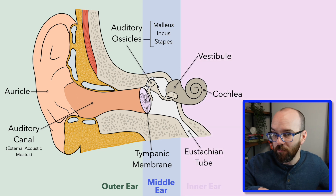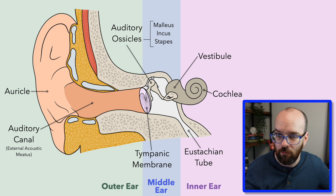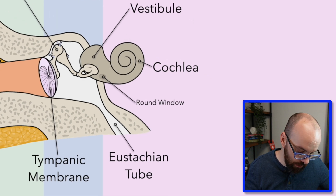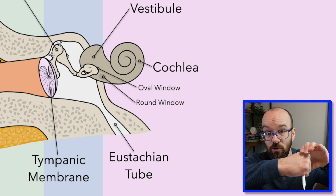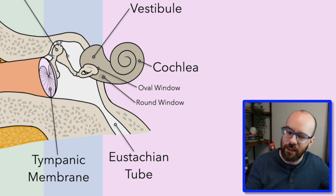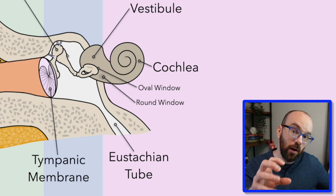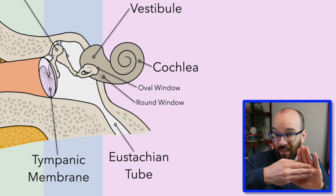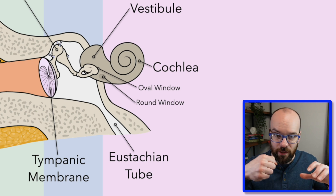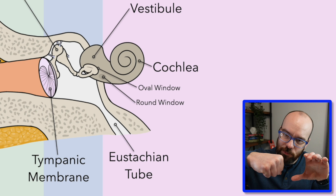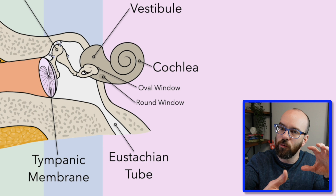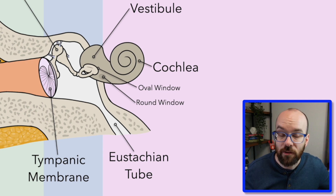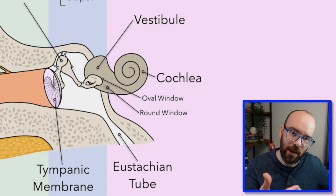All of the bony labyrinth is part of the inner ear. Two structures to add here: the oval window and the round window. The oval window is where the stapes actually pushes into the bony labyrinth. The round window isn't really an opening — it's a softer part of the bony labyrinth that can bulge out whenever the stapes pushes into the oval window, since everything is filled with fluid and needs somewhere to displace.